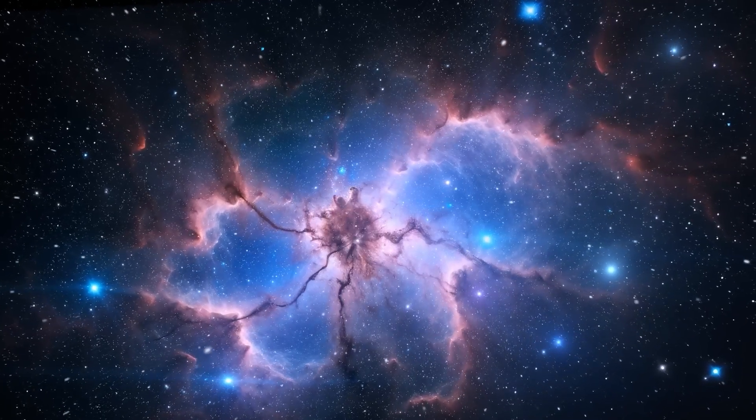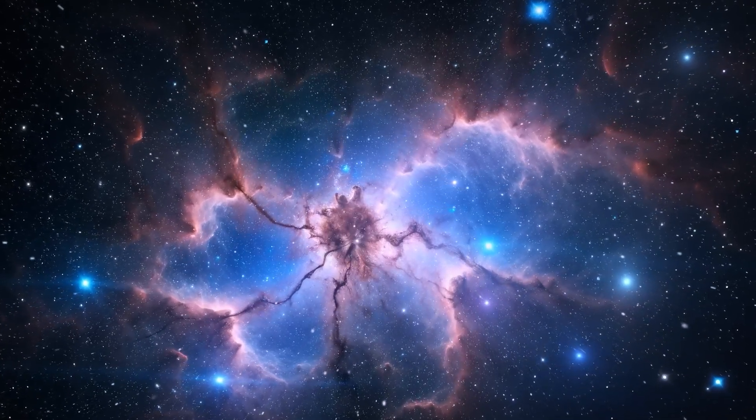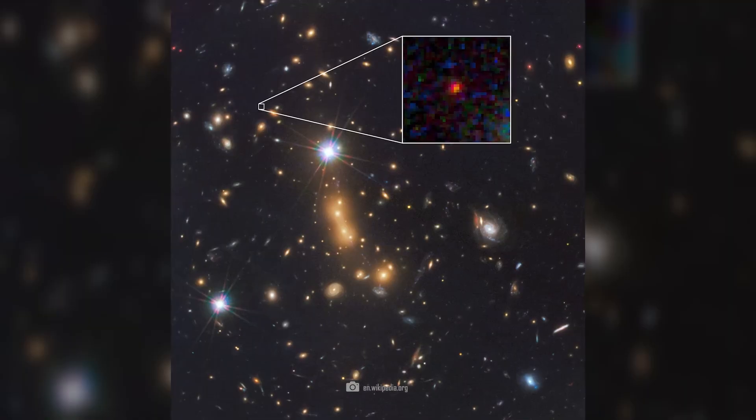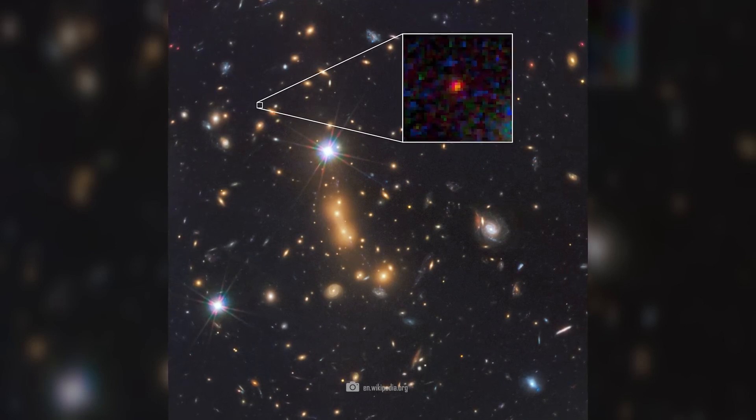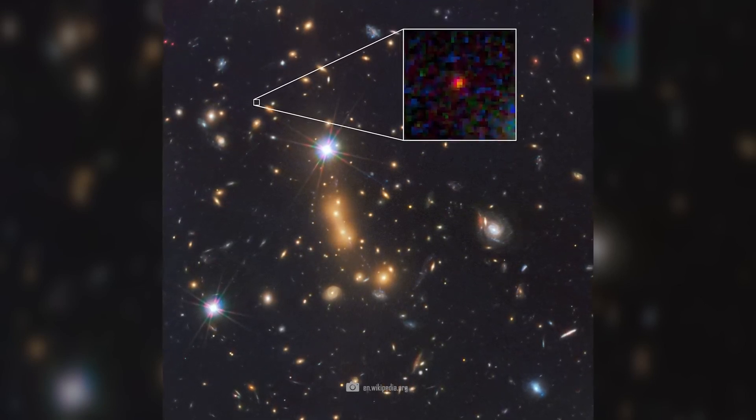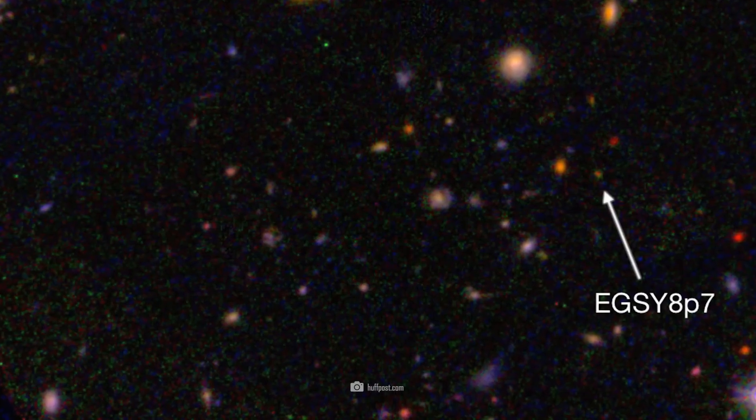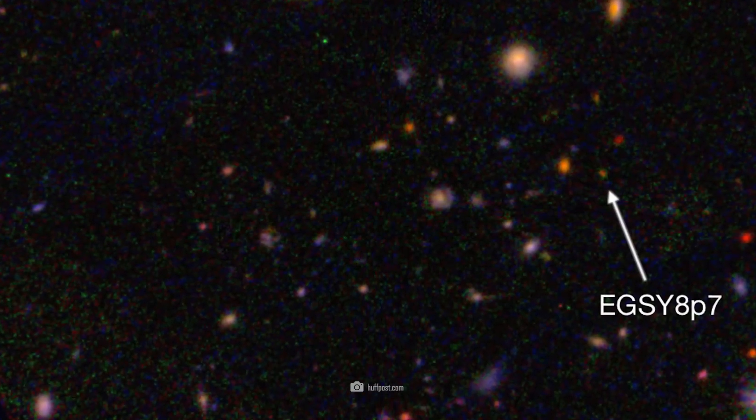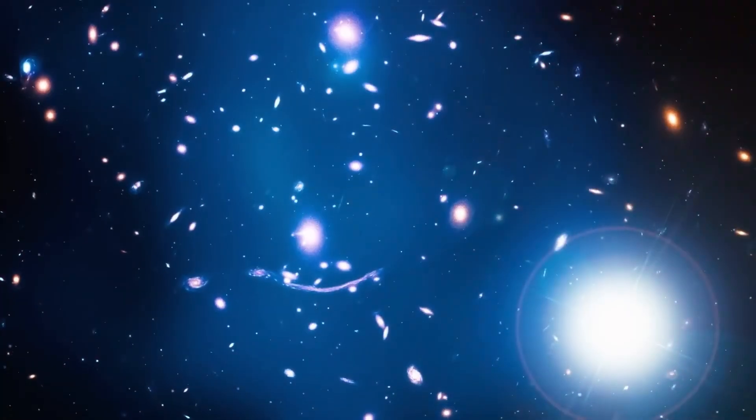Nevertheless, the JWST observations show that Mach S0647-JD has strong Lyman Alpha emissions and is thus producing a large number of new stars. This galaxy shows unusual activity for an actually faint and presumably small galaxy.